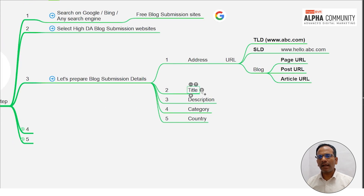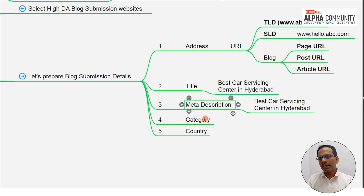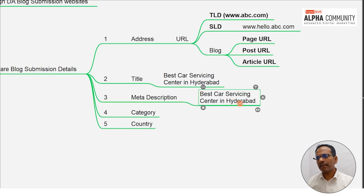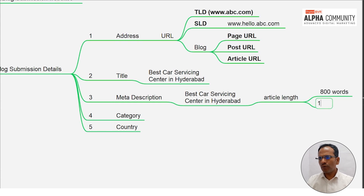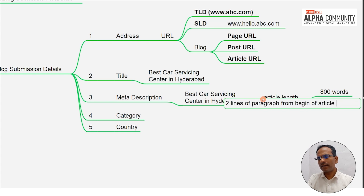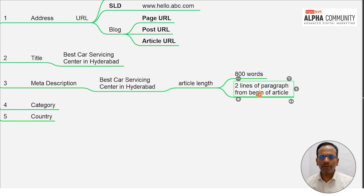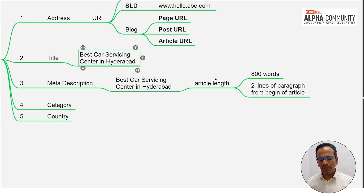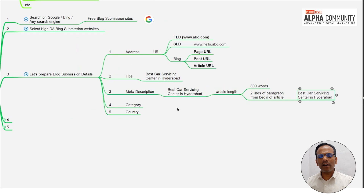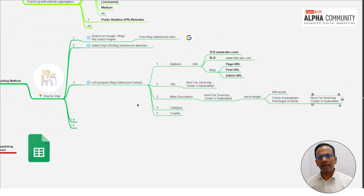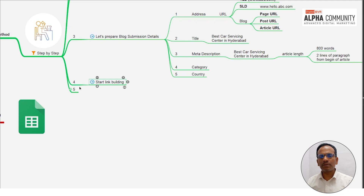The article length should be 800 words. In the first two lines of the paragraph — the beginning of the article — we have to add the keyword. That is the purpose of link building. Step four is to start link building. Once you have all the details ready, start link building and maintain your worksheet. These are the steps we have to prepare before we start the worksheet.